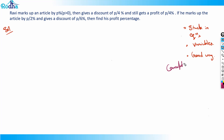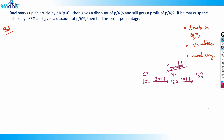The concept behind solving such questions is actually about successive change. For example, if the cost price is rupees 100 and the markup is 20 percent, the marked price becomes rupees 120. If the discount is 10 percent on marked price, then the selling price becomes 108.